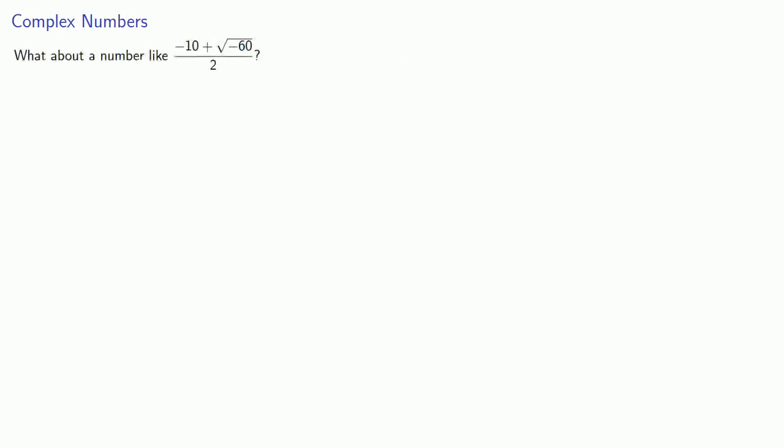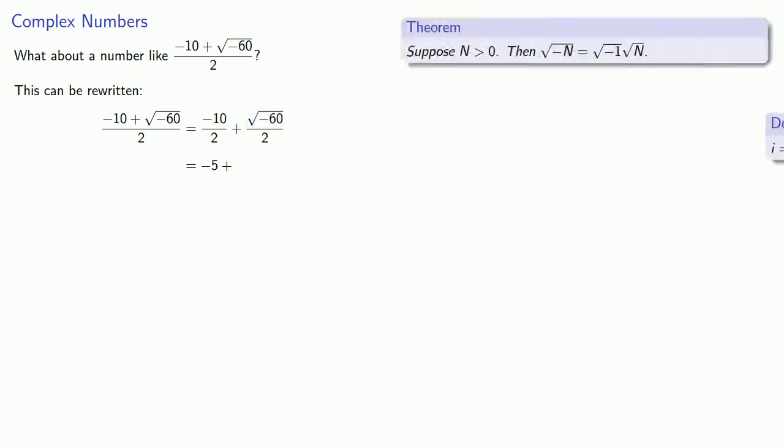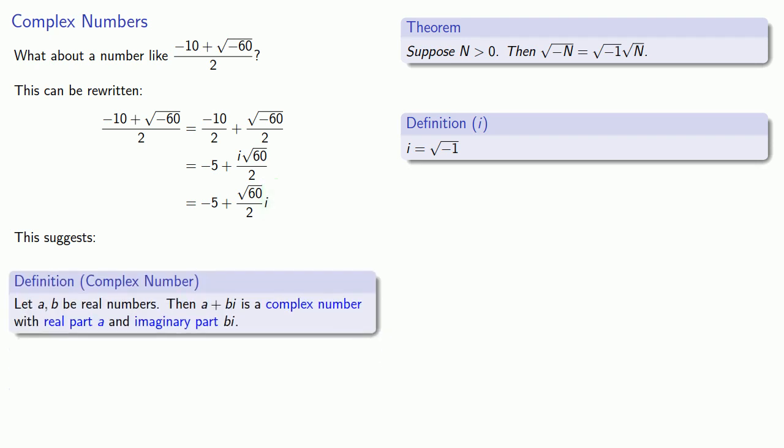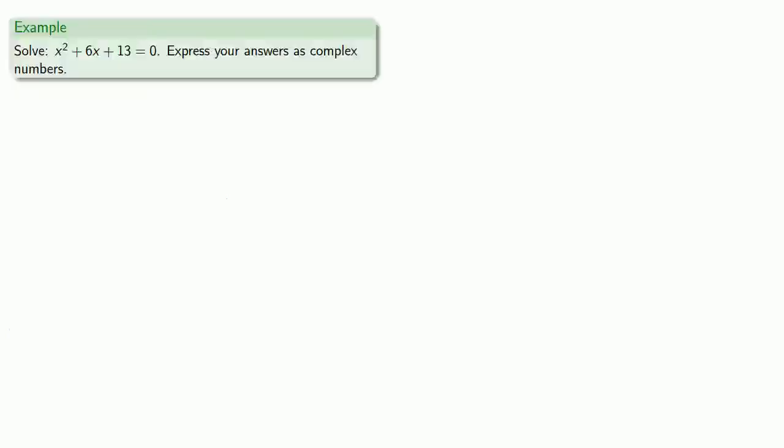What about numbers like our solution, minus 10 plus square root negative 60 over 2? The first thing to remember is that because this is a fraction, I can split the fraction apart. This negative 10 over 2, I can just write as negative 5. And because this is square root of negative 60, I can split off that negative 1 times 60, and that becomes i square root of 60. And again, we typically write the i after the fact. And what this leads to is the following. You'll notice that this number consists of a real number plus a real number times i. And so let a and b be real numbers. Then the expression a plus bi is a complex number with real part a and imaginary part b times i. And the introduction of complex numbers allows us to solve quadratic equations in any situation.